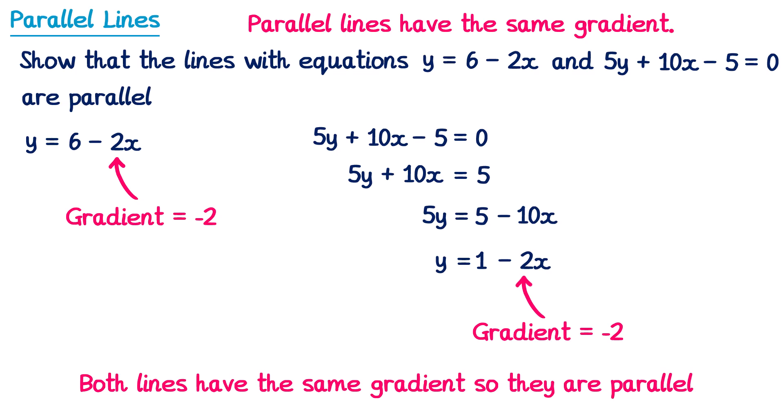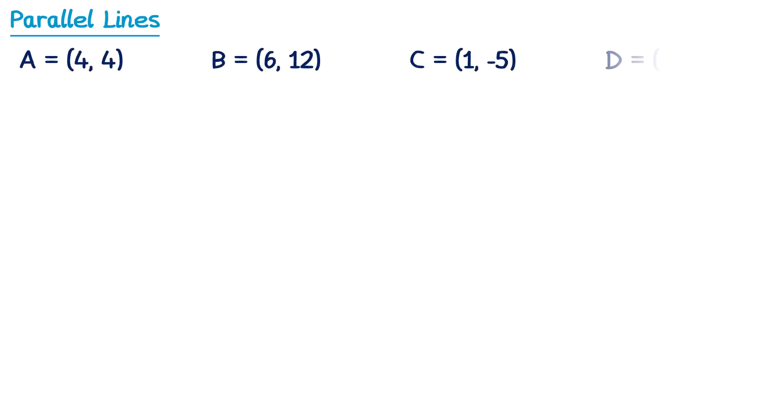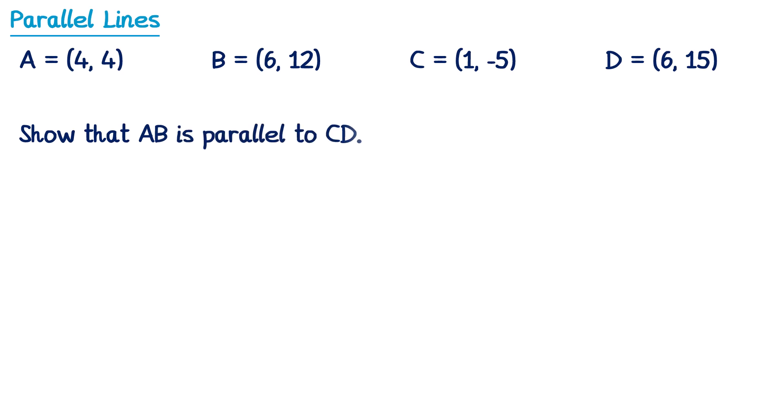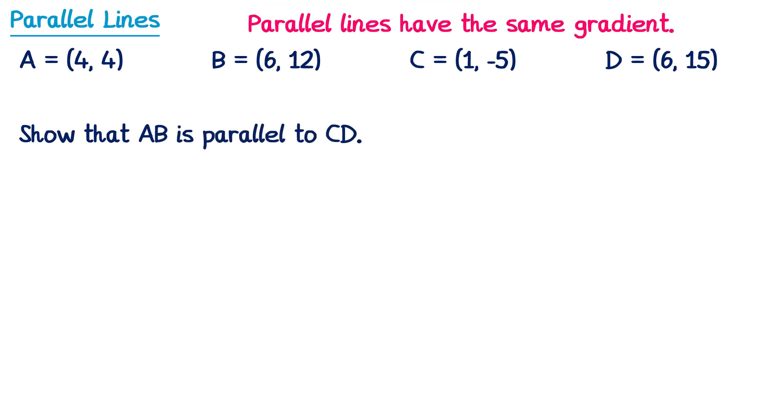It works in the same way for showing lines are not parallel — you'll find that they don't have the same gradient. Sometimes we need to show that two lines are parallel but we're only given some coordinates from the lines. For example, we could be told four coordinates and be asked to show that AB is parallel to CD. We're going to use the same fact: parallel lines have the same gradient, so we need to find the gradient of AB and the gradient of CD.